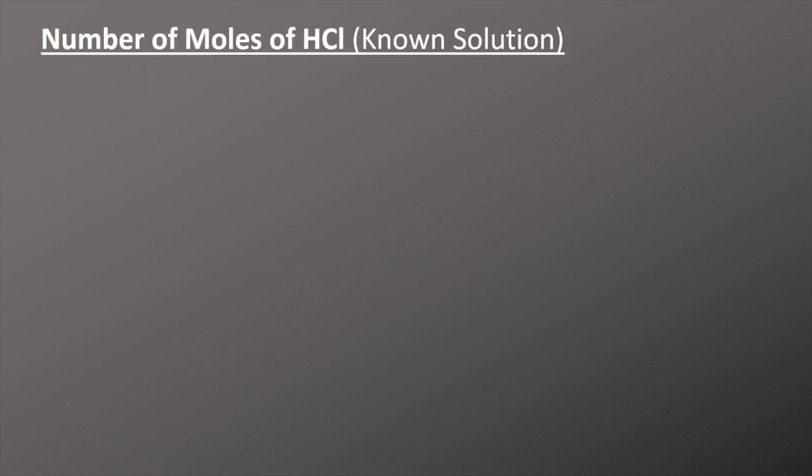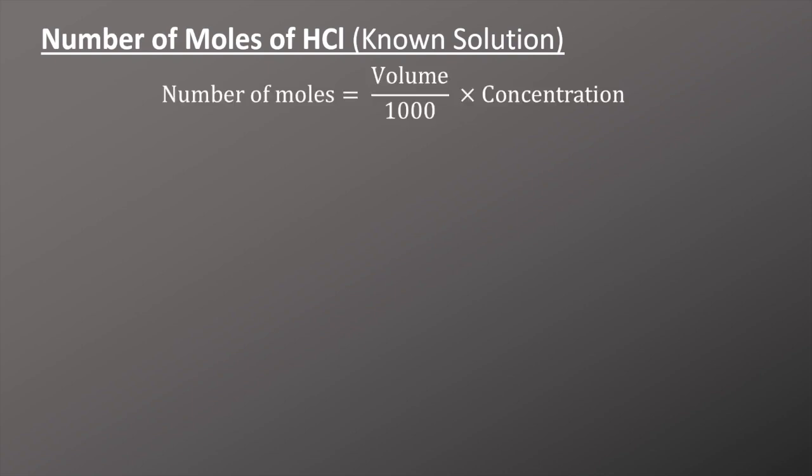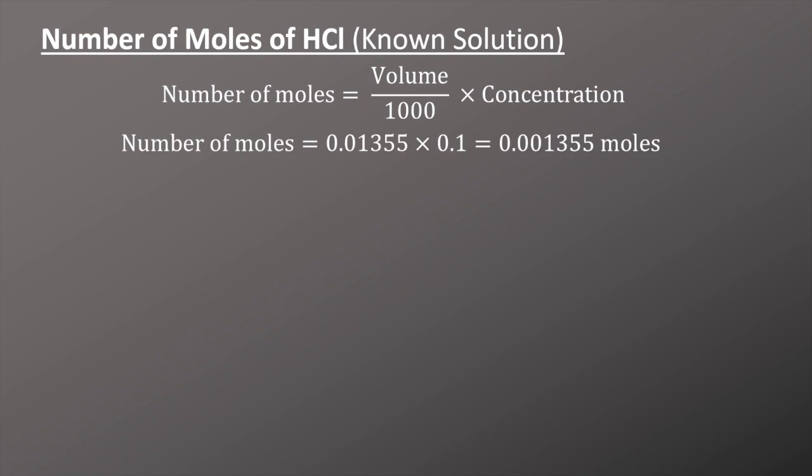So we'll look at the calculation for this titration. The first thing we'll do is work out the number of moles of hydrochloric acid, our known solution. To do this I use the equation: number of moles = volume ÷ 1000 × concentration. I've divided volume by 1000 to go from centimetres cubed to decimetres cubed. Putting the numbers in, I've got 0.01355 × 0.1, which gives me 0.001355 moles of hydrochloric acid.